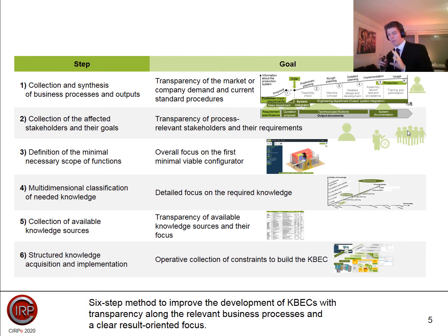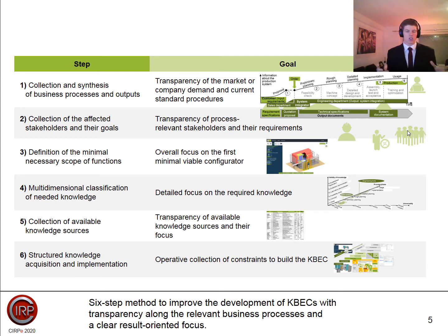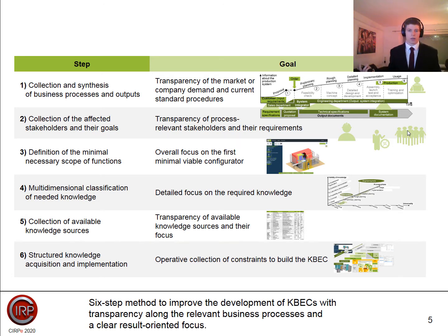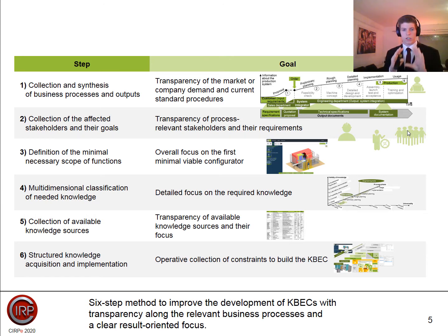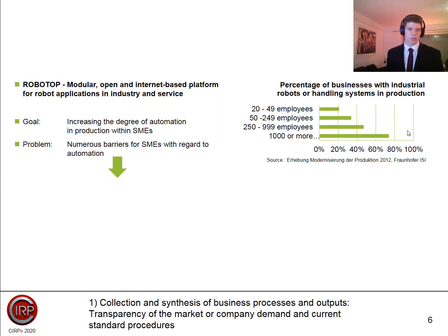A big problem is also where you get your knowledge from. If you don't have a company, there are different possibilities, and we didn't find any structured form to give an idea of where to collect the knowledge. It was a huge problem — people knew they needed knowledge but didn't know where to get it from. So step six is knowledge acquisition, and by then all the strategic aspects are defined. Starting with step one, the strategic perspective from Robotop targets SMEs.